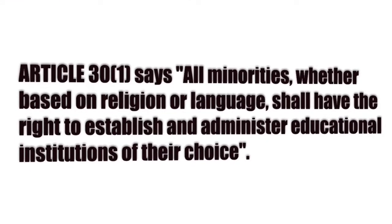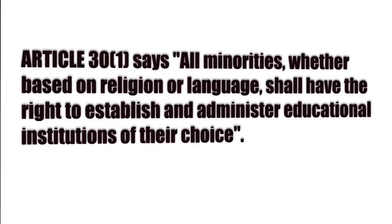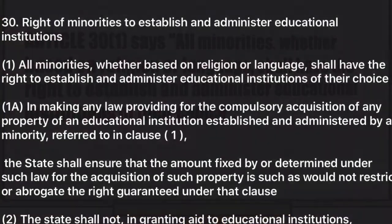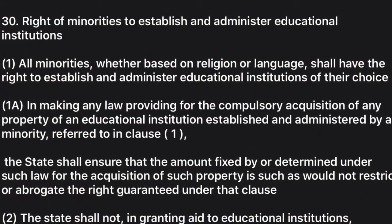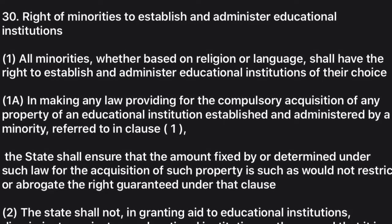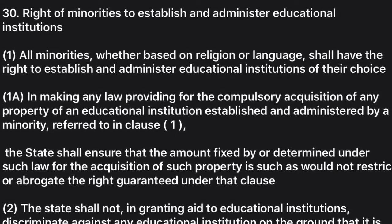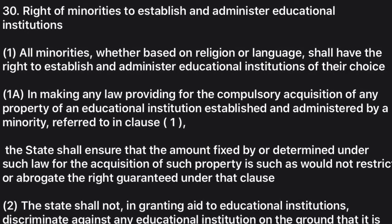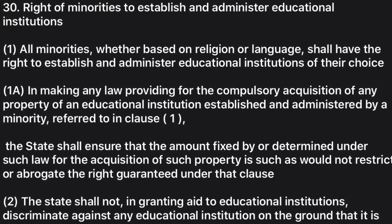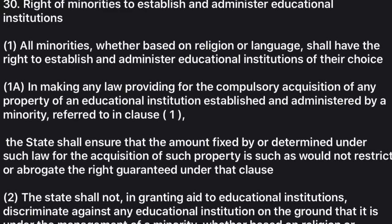Article 30 has two clauses. Article 30(1) promises to all linguistic and religious minorities the right to establish and the right to administer educational institutions of their own choice. The word 'establish' indicates the right to bring into existence, while the right to administer an institution means the right to effectively manage and conduct the affairs of the institution.